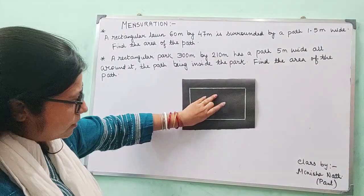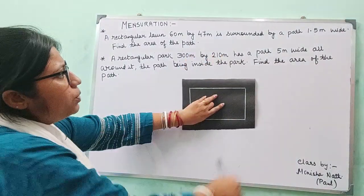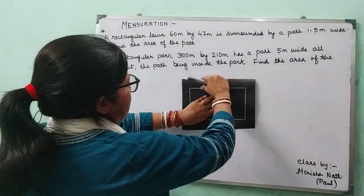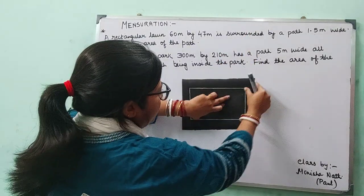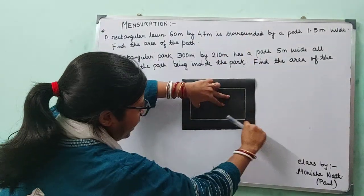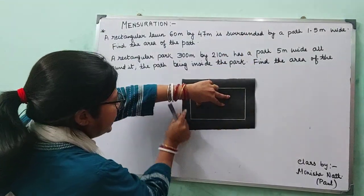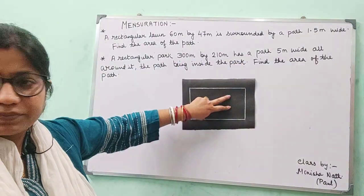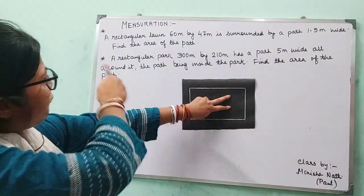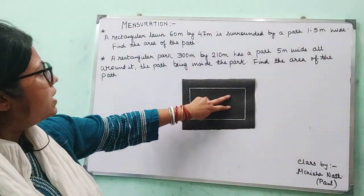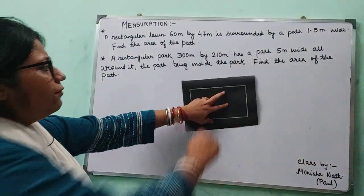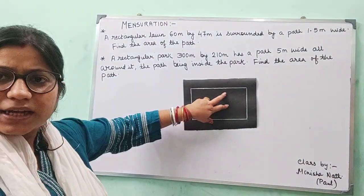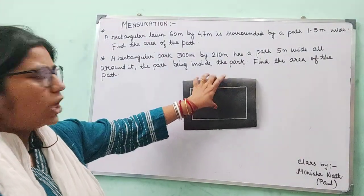This path — a path which is 1.5 meter wide — is running outside the lawn. We have to find the area of this path.